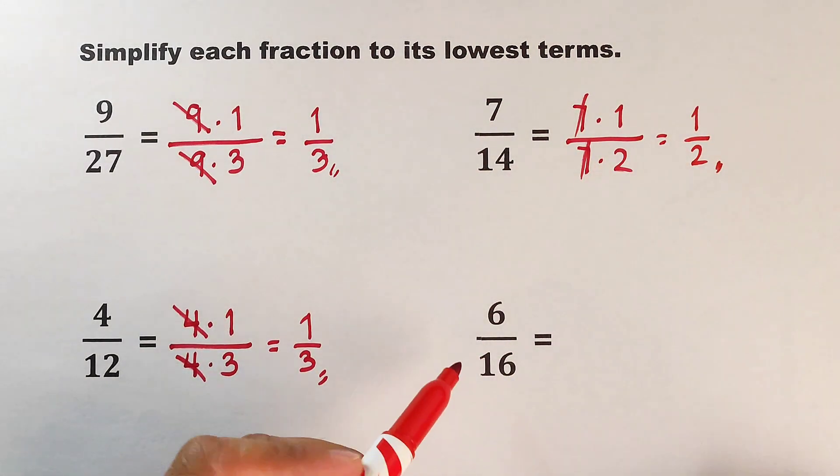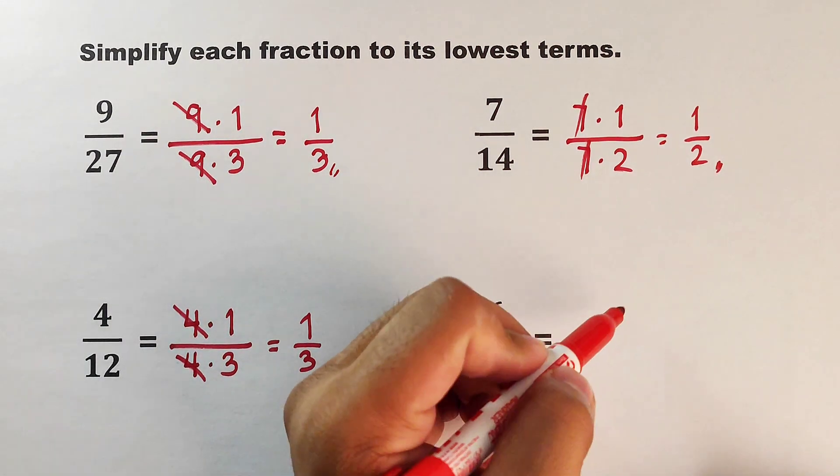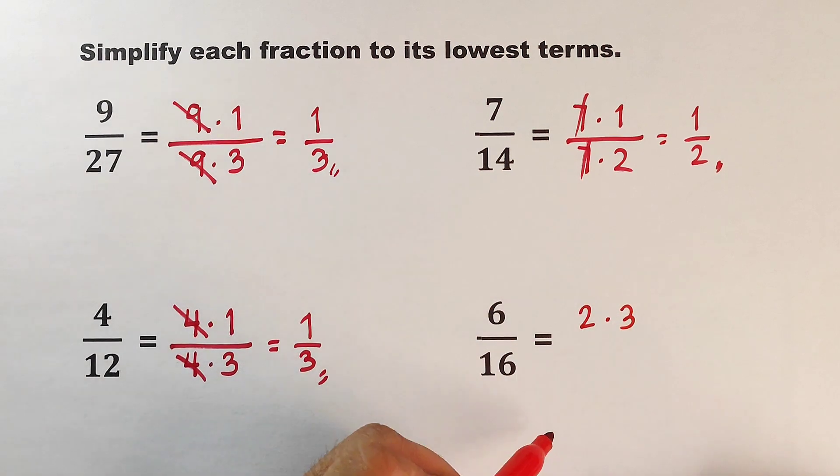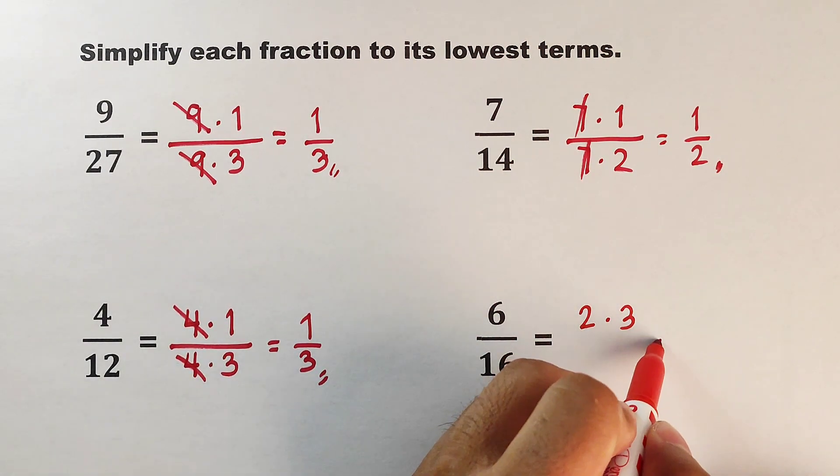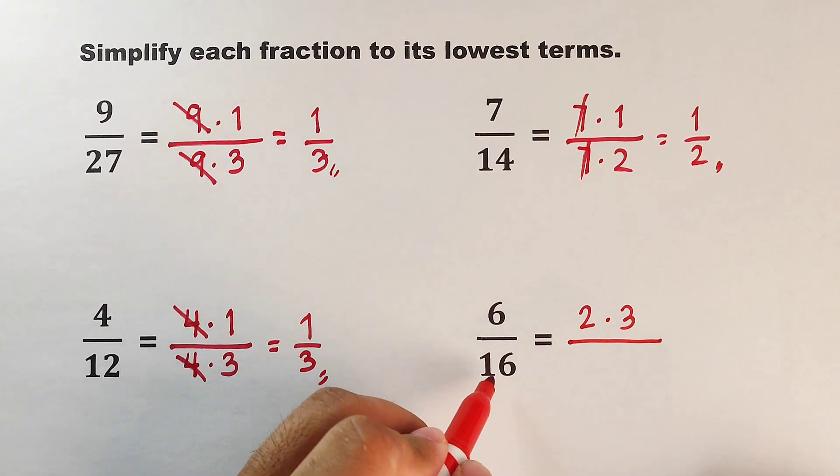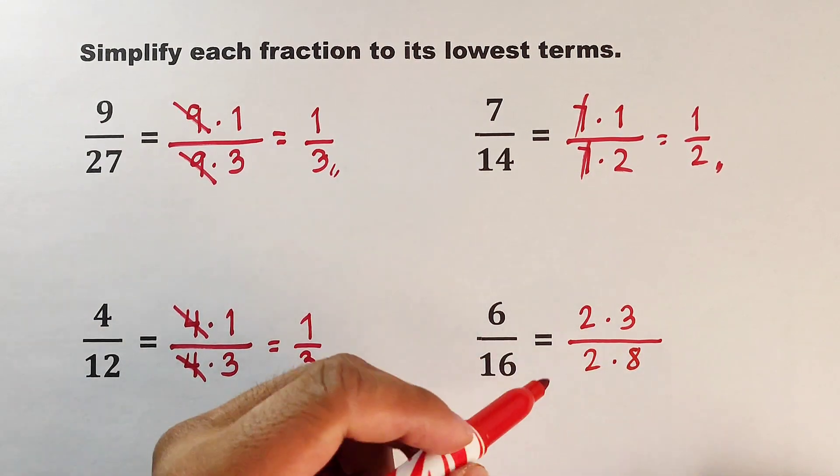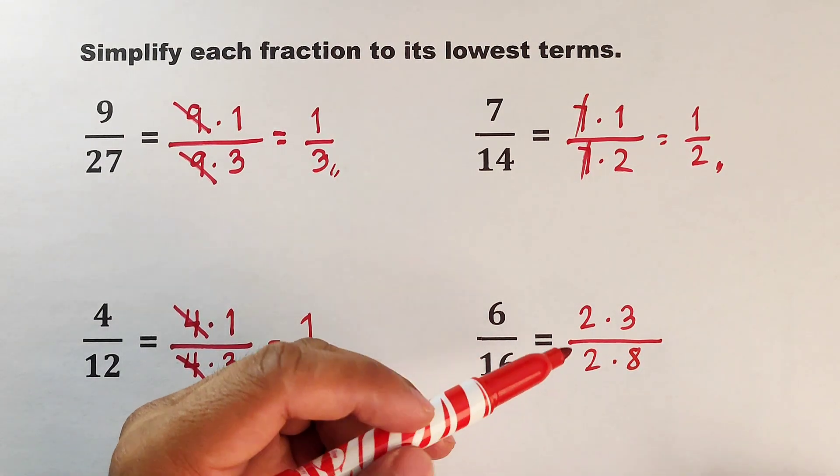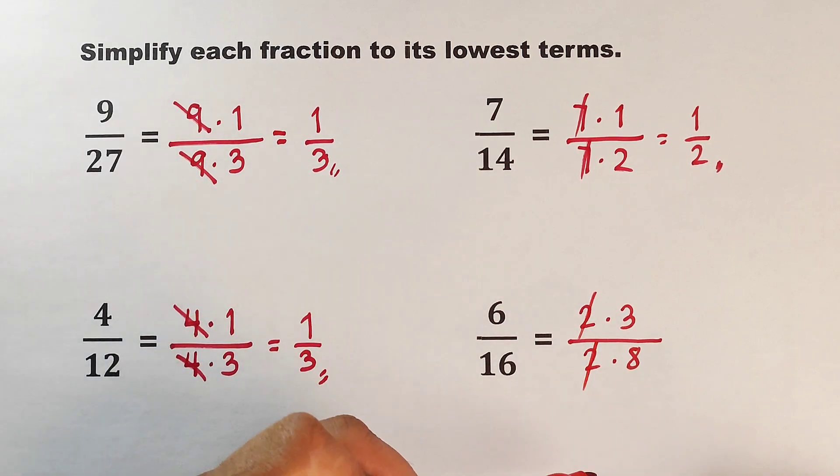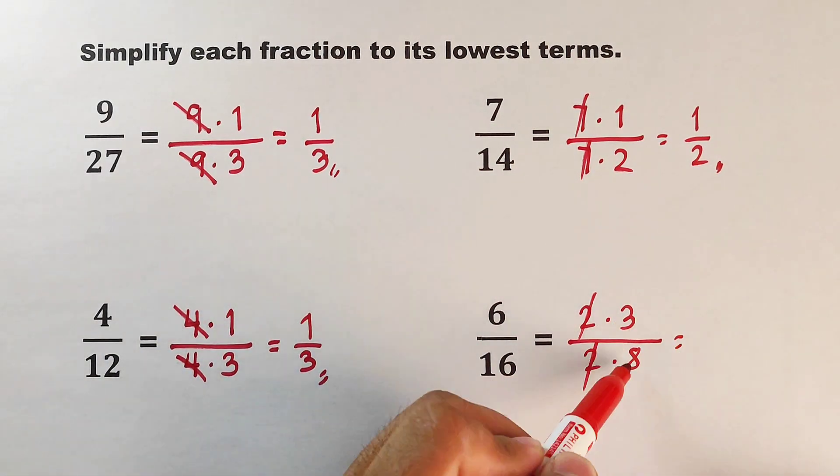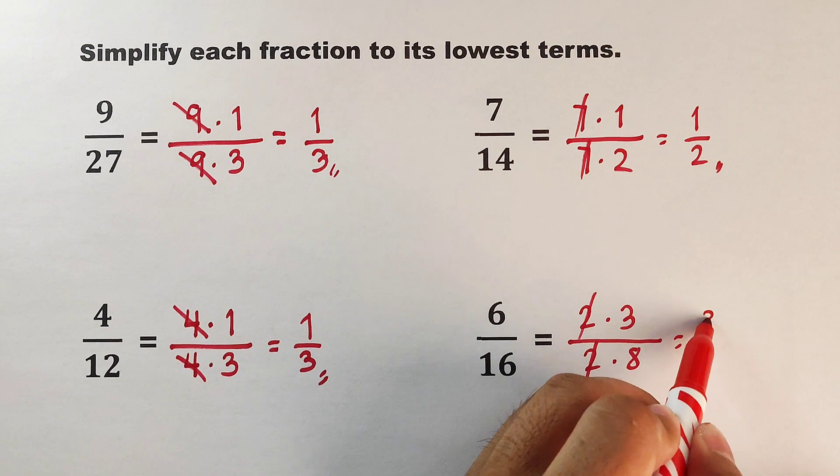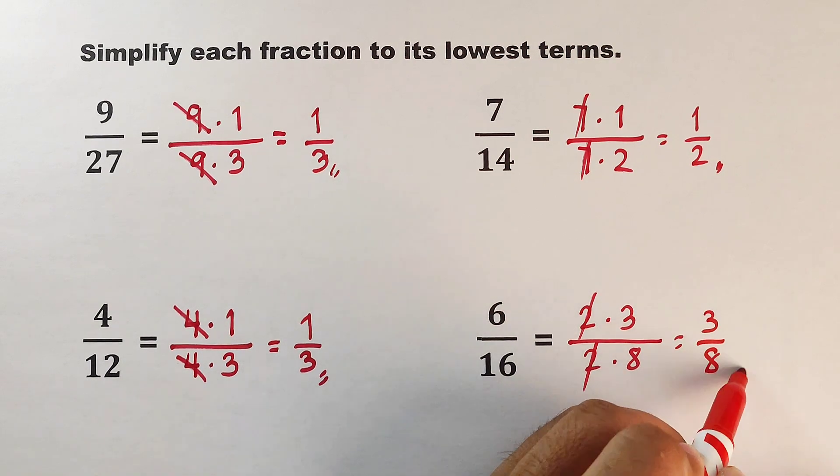Next, we have 6 over 16. For 6, this can be expressed as 2 times 3. For the denominator, you can factor this out as 2 times 8. As you can see, they have the common factor, which is 2. Cancel this out. And the simplified form of 6 over 16 is 3 over 8.